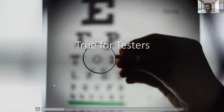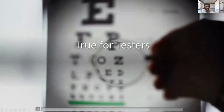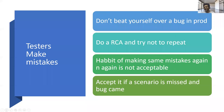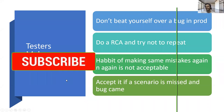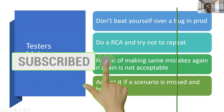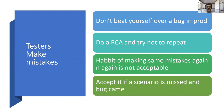We'll discuss what 'bug-proof' means for a tester. There is no such thing as bug-proof for a tester — I thought it was worth addressing. Testers are just like normal human beings; they do make mistakes. Don't beat yourself over a bug in production. Chances are that you can miss a bug and it can slip into production.